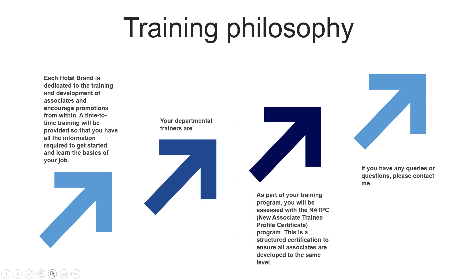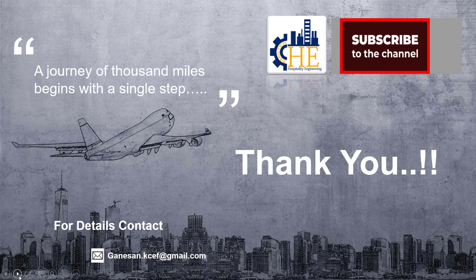Training philosophy in the hospitality sector: each hotel brand is dedicated to training and development of associates, and encourages promotions from within. From time to time, training will be provided so that you have all the information required to get started and learn the basics of your job. As part of your training program, you will be assessed with the NATPC — New Associate Training Profile Certificate Program. This is a structured certification to ensure all associates are developed to the same level. In this industry, training is a continuous process and never ends.